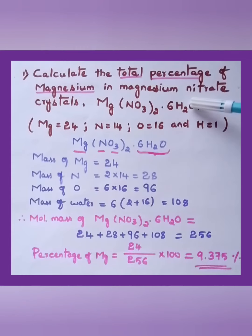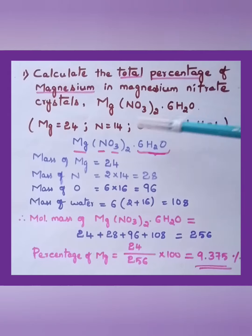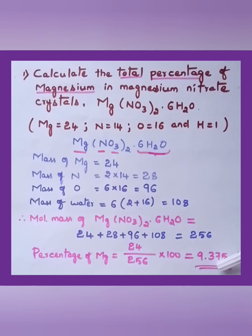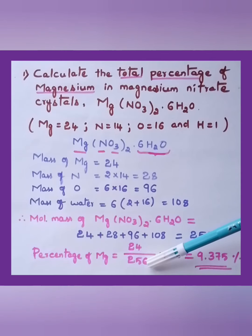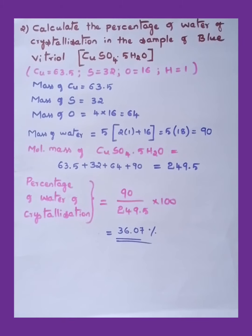We have to find the percentage of only magnesium. Mass of Mg is 24 out of molar mass 256. So: 24 ÷ 256 × 100. Simplify before multiplying to make calculation easier. The answer is 9.375%. Let's learn another numerical: calculate the percentage of water of crystallization in blue vitriol, CuSO₄·5H₂O.